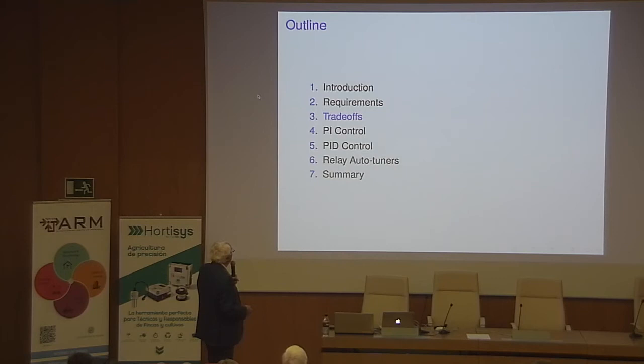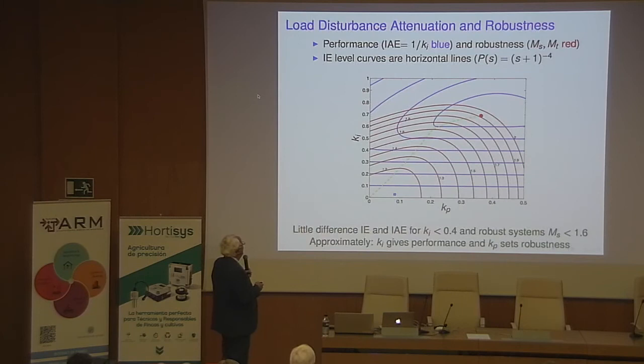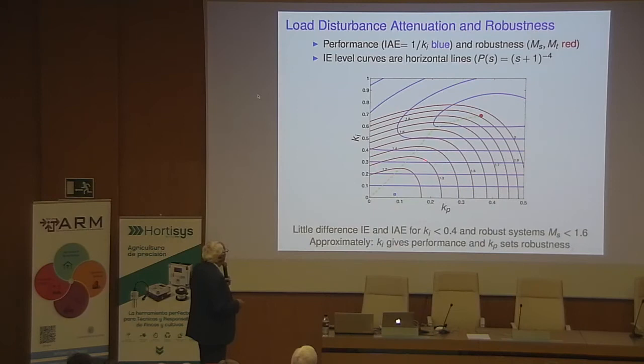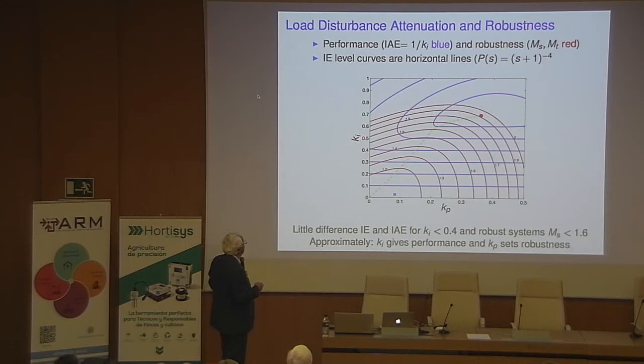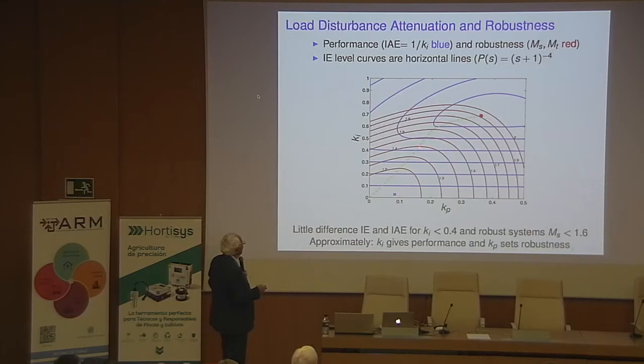Looking at trade-offs between load disturbance attenuation and robustness: for a specific design, the blue lines are level curves for integrated absolute error and the red curves are maximum sensitivity. The IAE level curves are almost parallel, so ki roughly determines performance — you set performance by the integral gain and adjust kp to achieve a desired maximum sensitivity level. You would like maximum performance but with a constraint on maximum sensitivity.